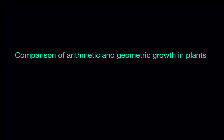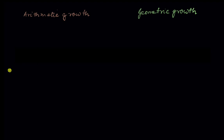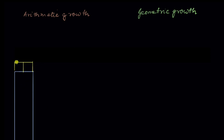In this video we are going to compare arithmetic and geometric growth in plants. Here we have the tip of a plant, and at the top of the tip there are two yellow cells which are meristematic cells. As you know, meristematic cells are cells that can divide. These cells divide, and each cell produces two cells in, let's say, one hour — so in one hour each cell divides to form two cells.